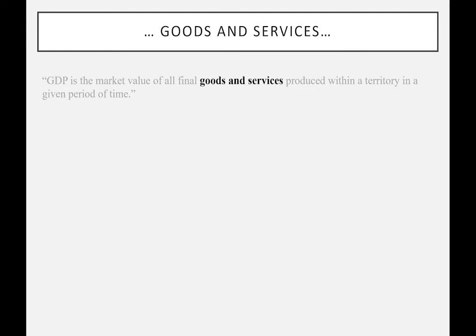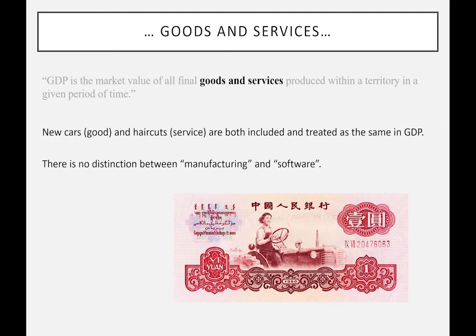Goods and services: GDP includes both goods and services. A good is something tangible; a haircut is a service — it doesn't matter, they both get added to GDP equally. Sometimes people think manufacturing, because it produces a tangible good, is more important than software development which is intangible. I'm showing a picture of Chinese money from a couple of years ago — it shows a woman driving a tractor and a factory with smoke, as if a factory is especially good for GDP. But in economics, rich countries don't have to produce something tangible — intellectual property works just as well.